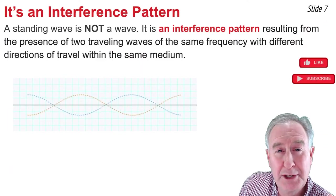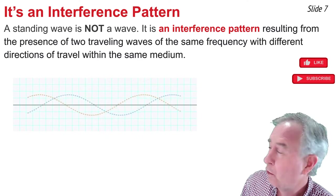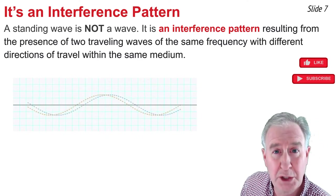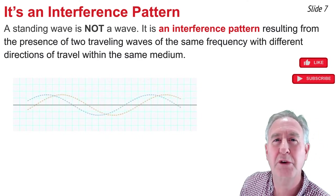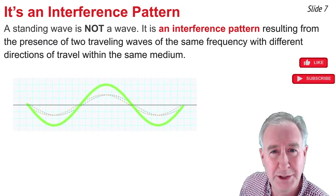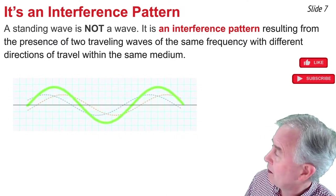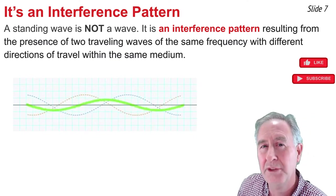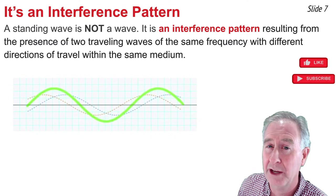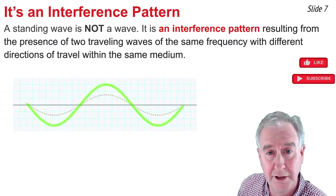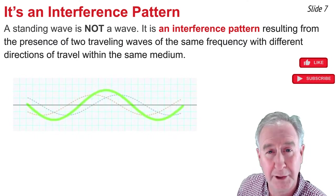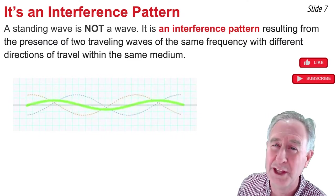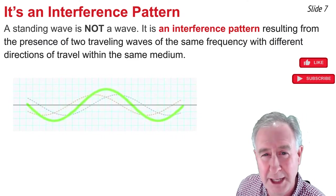This animation depicts a blue wave moving to the right and an orange wave moving to the left, and those are traveling waves, but you would never see traveling waves. Instead, you'd see the interference that results from the traveling waves, and that would be the green wave that you see here, the so-called standing wave. But do note that standing waves are not actually waves whatsoever. Instead, they are interference patterns that result from the interference of two waves having the same frequency, moving in the opposite directions along the same medium.